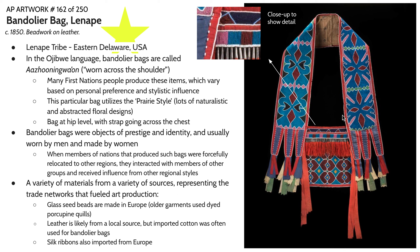The prairie style in Indigenous American art is characterized by naturalistic, abstract, and floral designs, like we're seeing on the strap. There are a lot of connections to the four cardinal directions and universal order in these kinds of designs — when you have a four-pointed item you have north, east, south, and west. Geography and direction are important facets of Indigenous American culture we see represented frequently. In these garments the bag sits at hip level and the strap goes across the chest — it's a crossbody bag. Bandolier bags were objects of prestige and identity, usually worn by men and made by women.